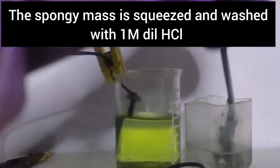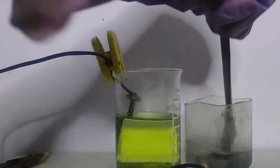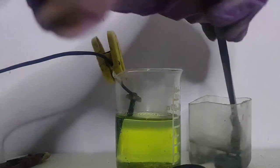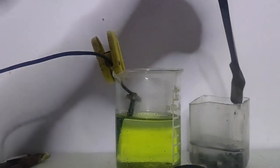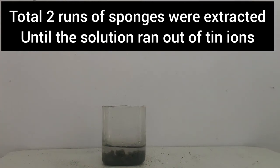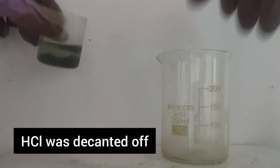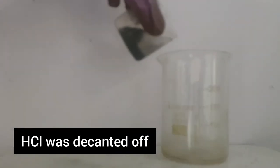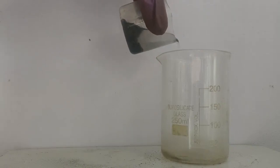The spongy mass was squeezed and washed with 1 molar dilute HCl. Two runs of spongy mass was extracted until the solution ran out of tin ions and the HCl was decanted off.